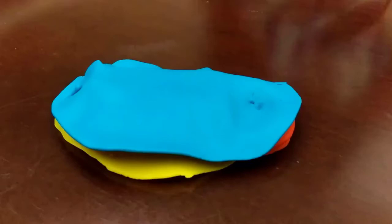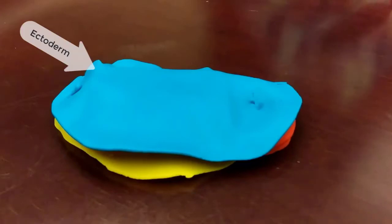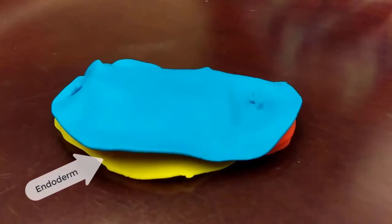This is a Play-Doh model of an embryo at week 3. Currently, this embryo is in a trilaminar germ disc form comprised of the ectoderm on the dorsal aspect, the blue Play-Doh, and the ventral most layer is the endoderm in yellow.